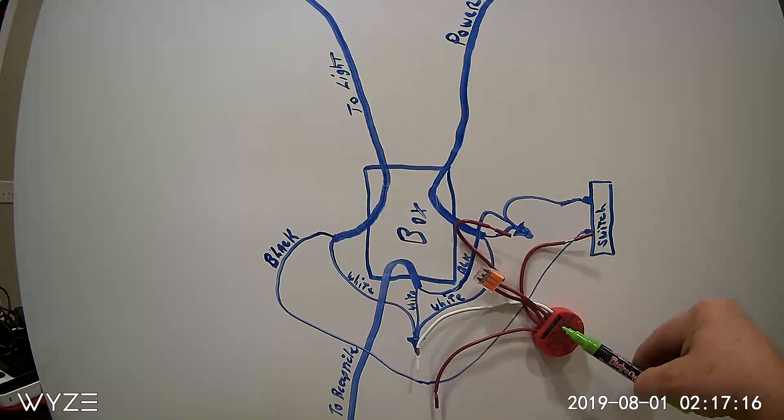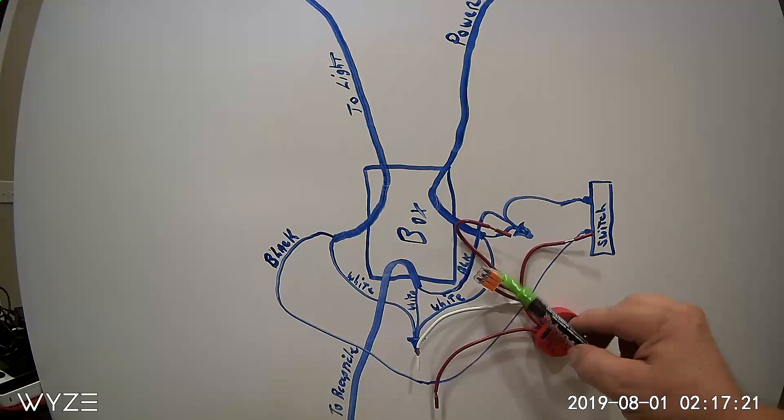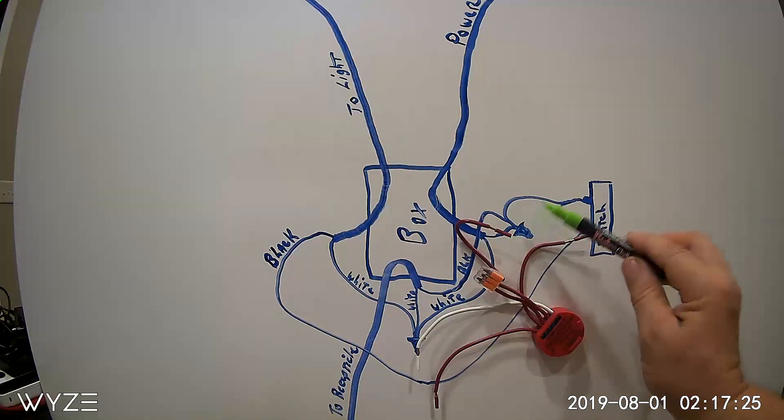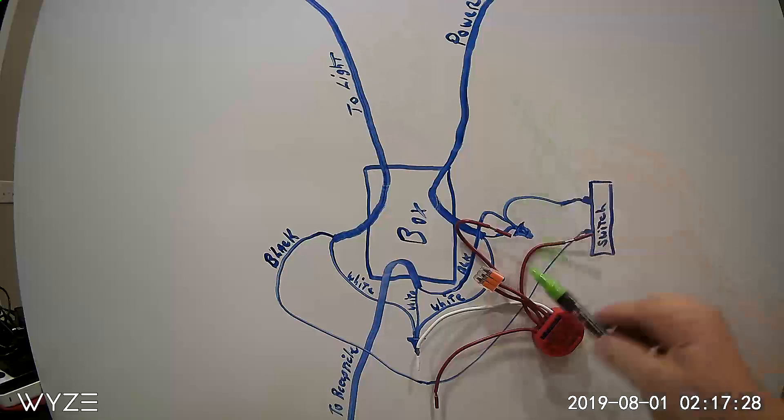Now you also have a line and a line one on the Shelly 1PM. I've connected those together and I have a single wire coming from those, that way there's not too many wires going into the wire nut.